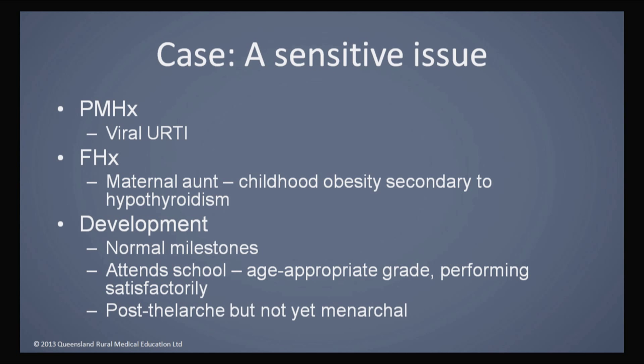Her past medical history was pretty unremarkable — a few coughs and colds, no long-term chronic illnesses, and she wasn't a frequent attender. Family history included a maternal aunt with childhood obesity secondary to hypothyroidism, but no diabetes, coeliac disease, or other notable endocrine issues. Mum and dad were quite well. Her development had been reasonably normal with no milestone concerns. She was attending school, passing her grades. She had some breast development but hadn't yet started her periods.